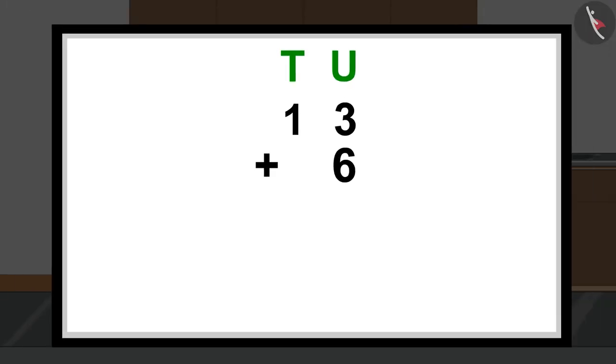First, we will write both the numbers like this in a vertical addition format. Then, we will add the numbers written in the unit section. 3 plus 6 is equal to 9. Then I will write it like this under the unit section.